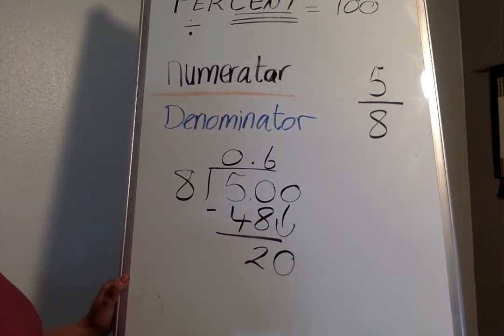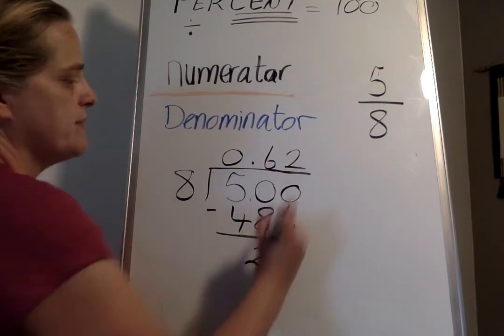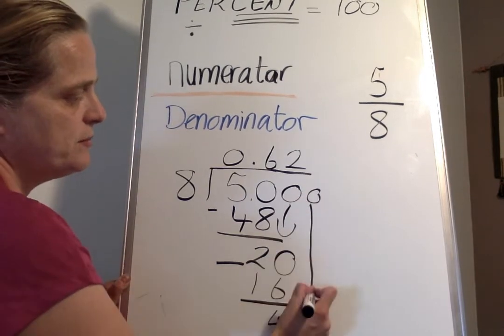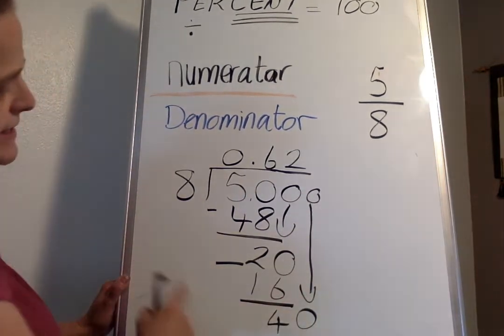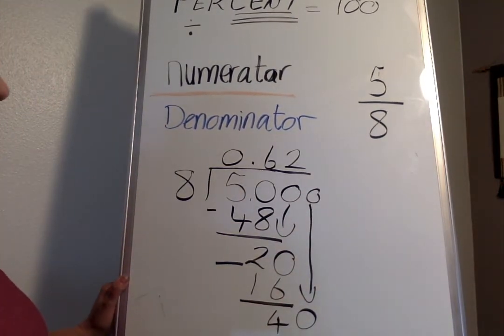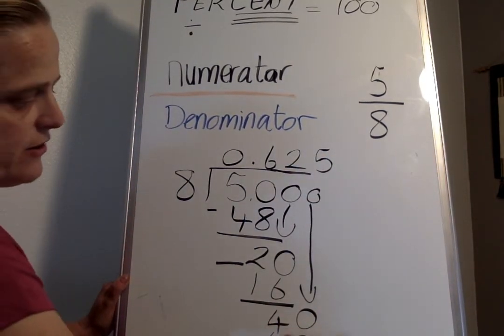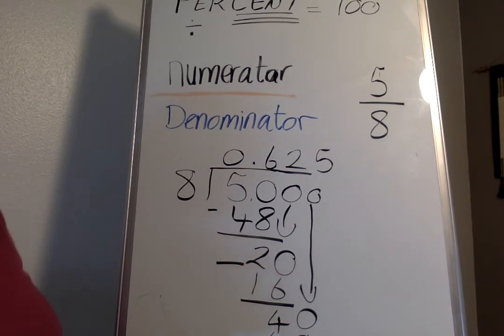Does 8 divide into 20? Yes it sure does, it goes twice. 2 times 8 is 16. Subtract, 4. Add another zero, bring it on down. Does 8 divide into 40? Yes it does, 5. And then 5 eighths or 40, knock it off at the end as a zero. So if you notice, the decimal then is 0.625.